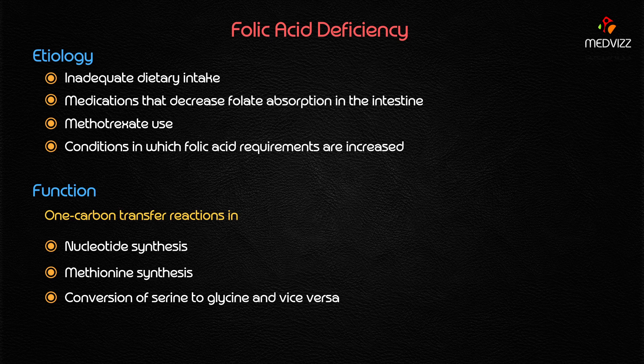The reduced form of folic acid is called tetrahydrofolate, which acts as a cofactor for many one-carbon transfer reactions — mainly in nucleotide synthesis, especially in the conversion of dUMP to dTMP in the synthesis of thymidylate. Folic acid is also important in methionine synthesis, specifically the conversion of homocysteine to methionine. These two reactions — thymidylate synthesis and homocysteine-to-methionine conversion — are the most important steps requiring folic acid.